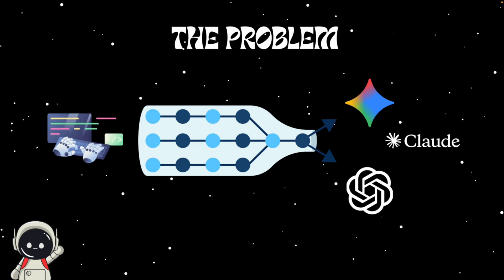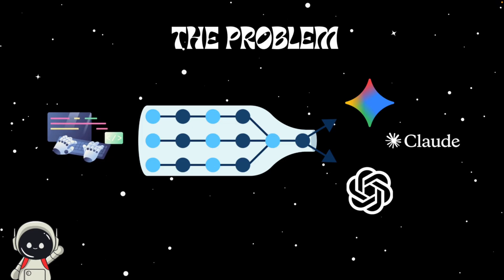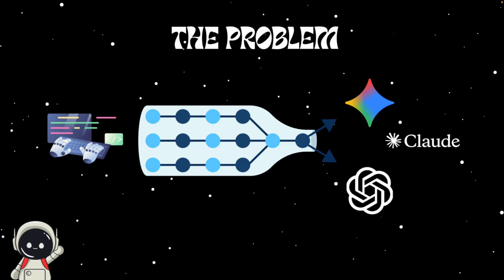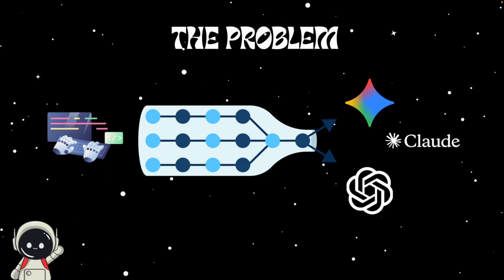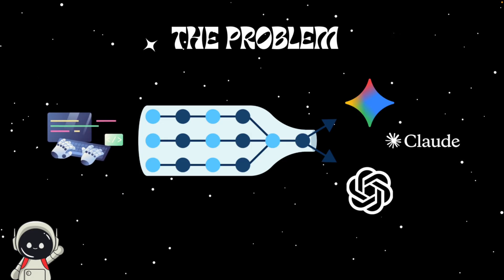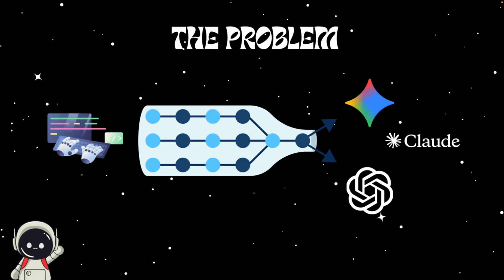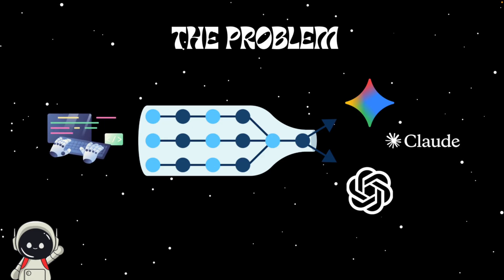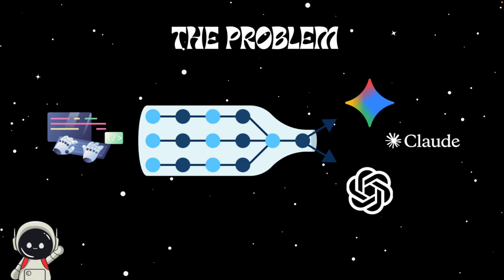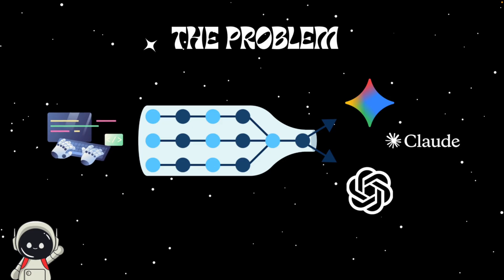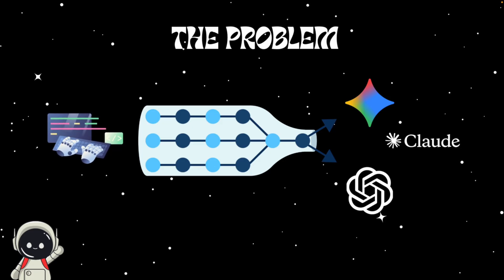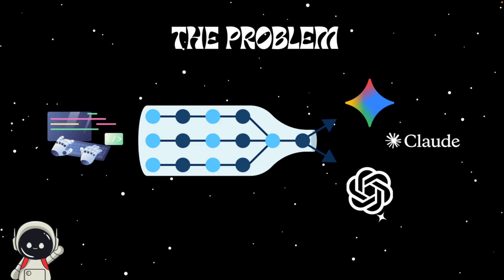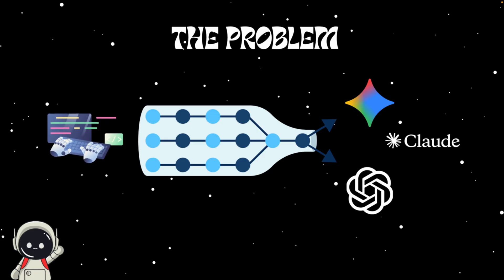That's why having a larger context window matters so much nowadays. It improves coherence because the model can recall earlier details, it improves accuracy because it can verify facts across longer texts, and it opens up new use cases like analyzing full books, coding across multiple files, or running intelligent AI agents. But there's a trade-off: longer context means higher compute costs, slower latency, and sometimes the model loses focus because it's juggling too much information.